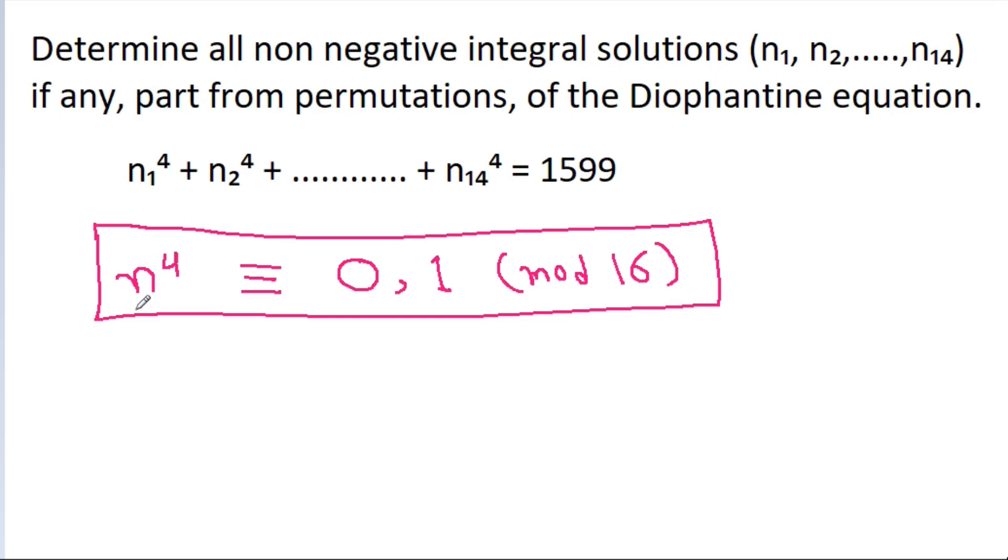We can also prove it: n can be even, 2k, and (2k)⁴ = 16k⁴, which is equivalent to 0 mod 16.